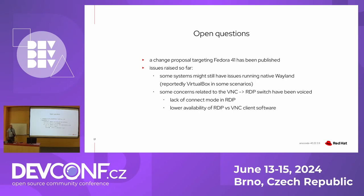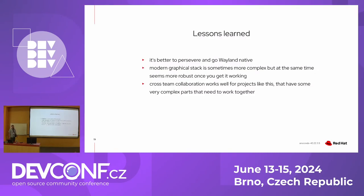Some open questions: we don't really have fallback support right now, and we'd like to avoid adding it because it would significantly increase complexity if we added Wayland support while keeping all the Xorg code in place. There was an argument that Fedora defaults to Wayland but has some fallback mechanisms. We'll need to do more testing. Also the lack of connect mode and differences in RDP — we'll see how it goes. Lessons learned: the decision and successful implementation of native Wayland support has been positive so far. The modern graphical stack is definitely more complex, but it seems more robust. Cross-team collaboration was very interesting and totally necessary — the desktop team and GPU team helped us debug very complex issues we could never have solved ourselves.